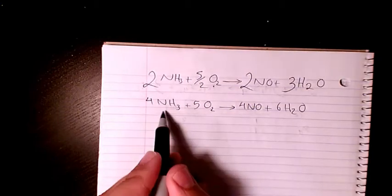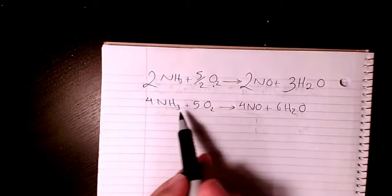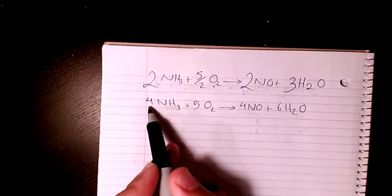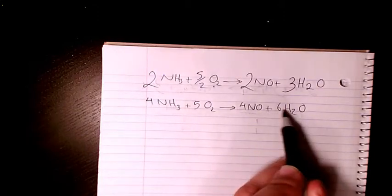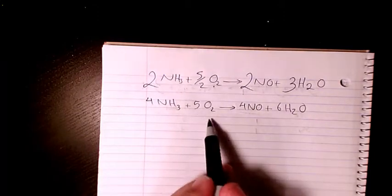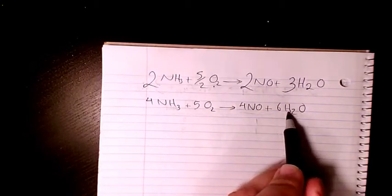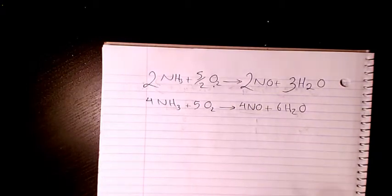So as you see here, nitrogen we have four and four. Hydrogen we have twelve: four times three is twelve, and here we have six times two is twelve. Oxygen: five times two is ten, four in here and six in here. So that's balanced.